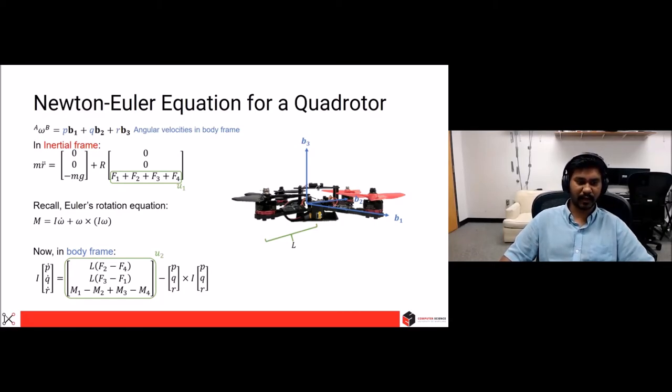And recall from Euler's rotation equation, the total moment is I omega dot plus omega cross I omega, which is written in body frame here. I into P dot Q dot R dot will be L into F2 minus F4, and L into F3 minus F1, and M1 plus M3 minus M2 minus M4.